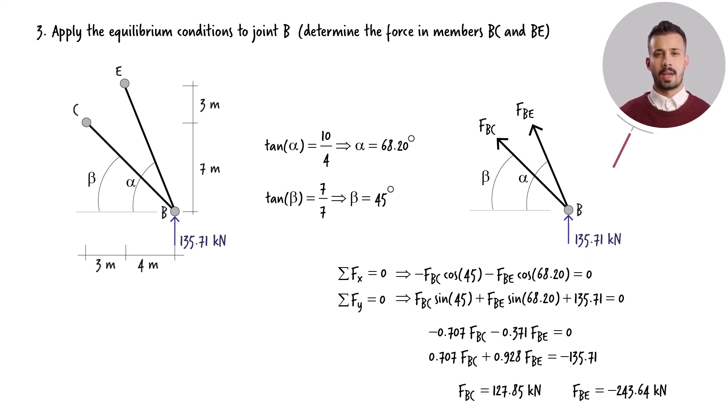So, member BC carries a tensile force of 128 kN, whereas member BE has a compressive force of 244 kN.